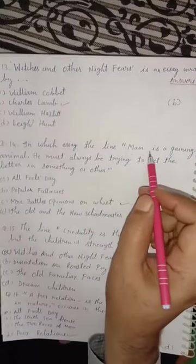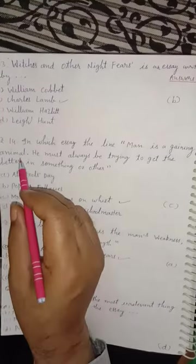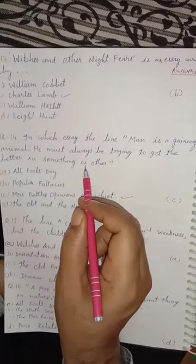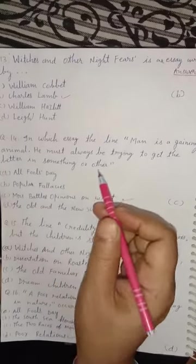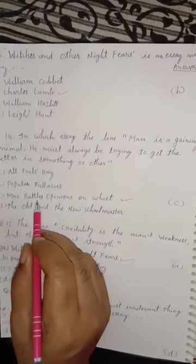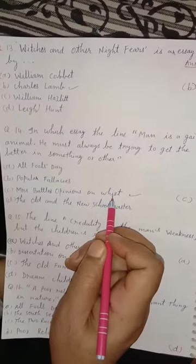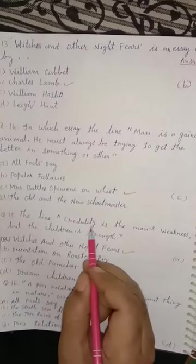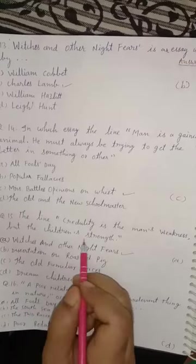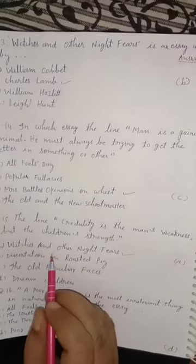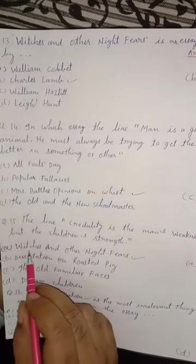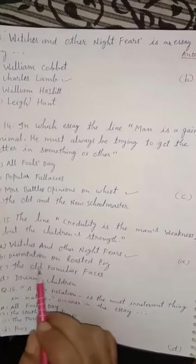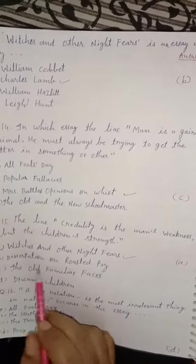Question 14. In which essay does the line 'Man is a gaming animal; he must always be trying to get the better in something or other' occur? This famous line is given in 'Mrs. Battle's Opinions on Whist.' Option C is correct. Question 15. The line 'Graduality is man's weakness but the children's strength' — this famous line is mentioned in the essay 'Witches and Other Night Fears.' Option A is correct.